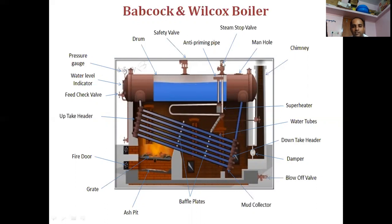Its parts include: manhole, steam stop valve for collection of steam, anti-priming pipe, safety valve, the drum, pressure gauge to check the pressure, water level indicator to check the level of water present inside the boiler shell, feed check valve, uptake header, downtake header, the fire door, and the grate where combustion of fuel takes place, and ash pit for the collection of ash.